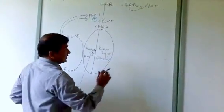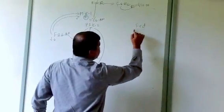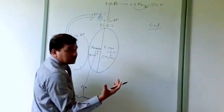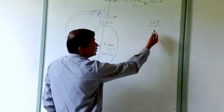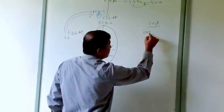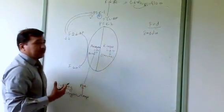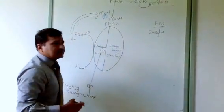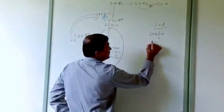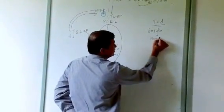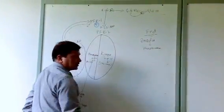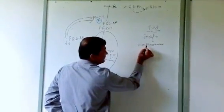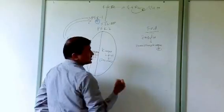Now in the fed state — when a person takes a meal — there will be an increase in blood glucose concentration. Glucose enters the beta cells of the pancreas and triggers the release of insulin. Insulin, through a tyrosine kinase-catalyzed signal cascading process, activates protein phosphatases. These protein phosphatases are getting phosphorylated in the presence of insulin.